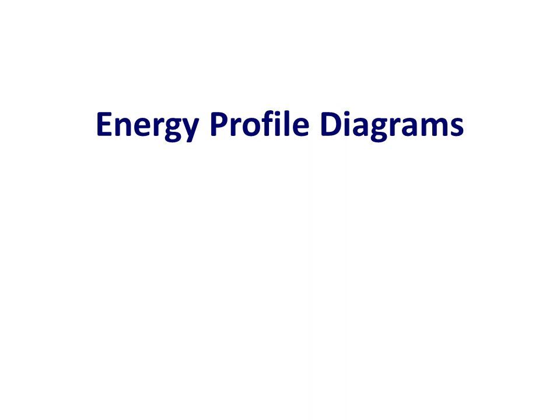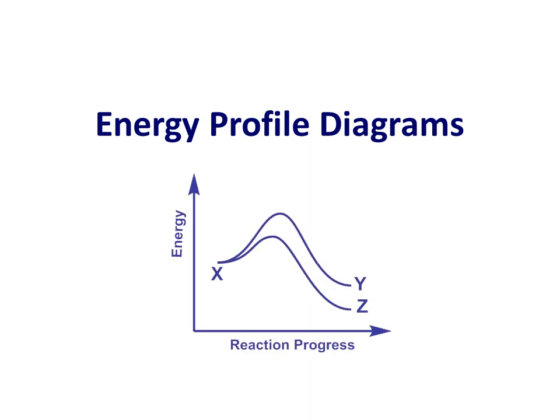We organic chemists spend a lot of our time representing reactions using curly arrows. It is an immensely powerful way to understand how reactions occur, but there are other ways to represent reactions.